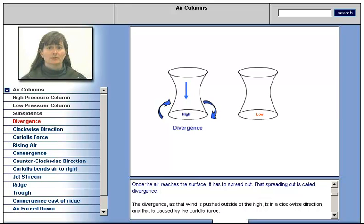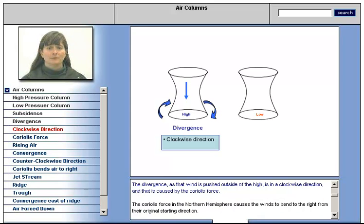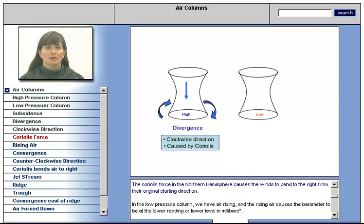Once the air reaches the surface, it has to spread out. That spreading out is called divergence. The divergence, as that wind is pushed outside of the high, is in a clockwise direction, and that is caused by the Coriolis force. The Coriolis force in the northern hemisphere causes the wind to bend to the right from their original starting direction.